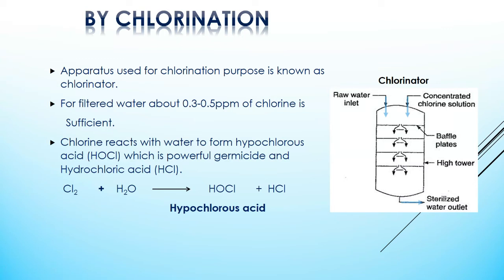For filtered water, about 0.3 to 0.5 ppm of chlorine is sufficient. Chlorine on hydrolysis produces hypochlorous acid, which is a powerful germicide. This hypochlorous acid reacts and inactivates enzymes in the cells of microorganisms, which leads to the death of harmful bacteria. Chlorination is an effective and economical method which can be used at low as well as high temperatures, and introduces no salt impurities in water.